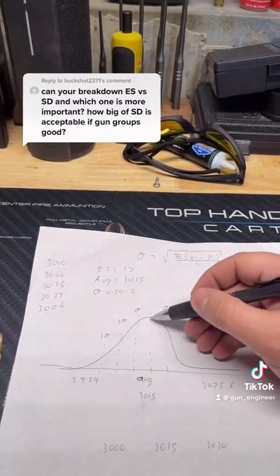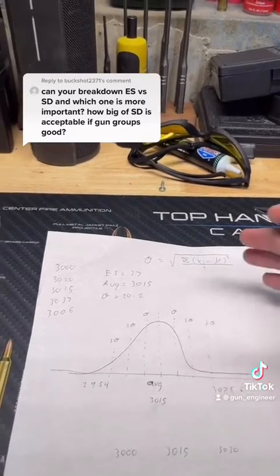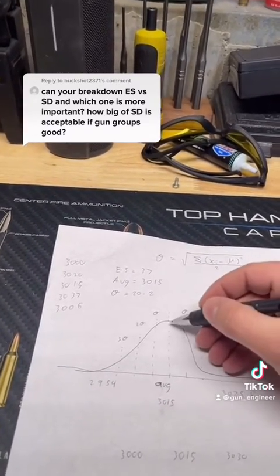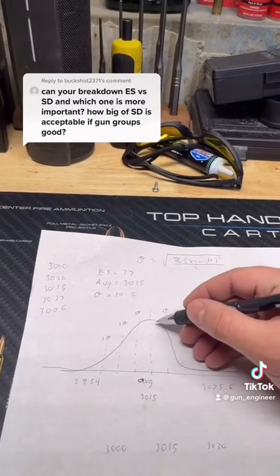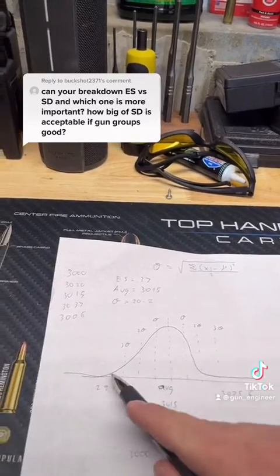The closer you are to the average, the better chances you are that your velocity will be close to the average. You get more shots in this range than you're extreme high and you're extreme low. You start to get less numbers of shots.